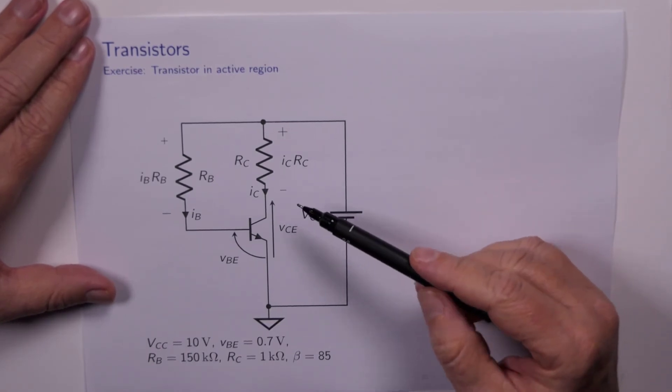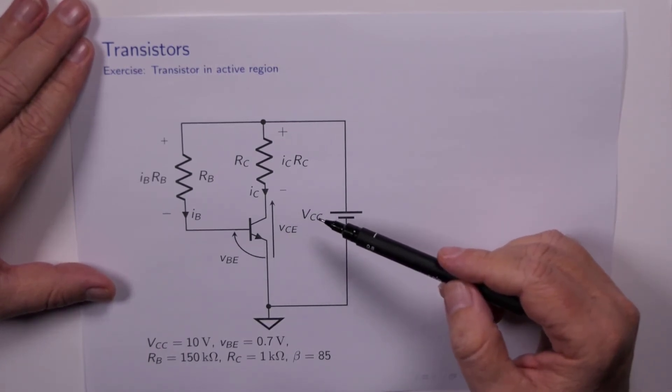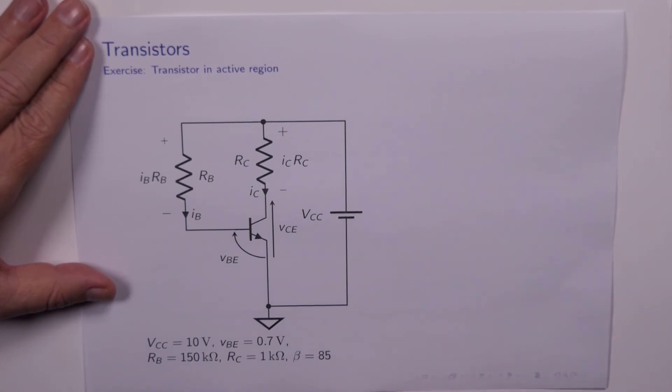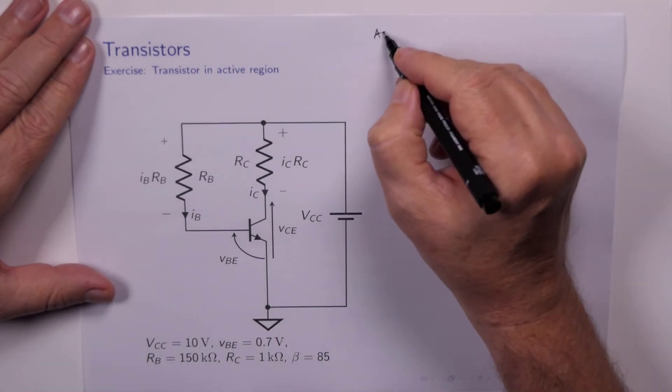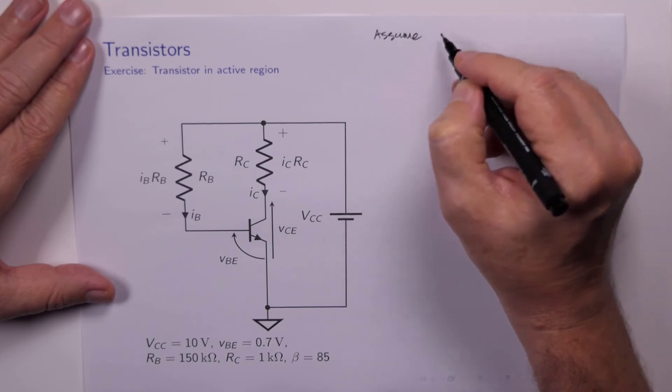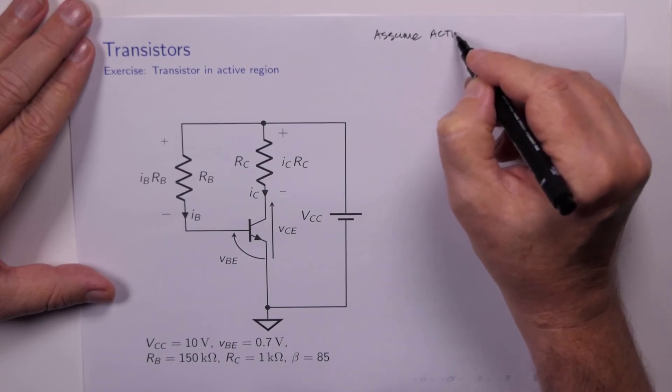No prizes for guessing which region this transistor is in. This circuit topology is exactly the same as the last one, but some of these values are a bit different. RB is now much larger. Beta is a little bit smaller. So let's go ahead and work stuff out. So we'll assume again,